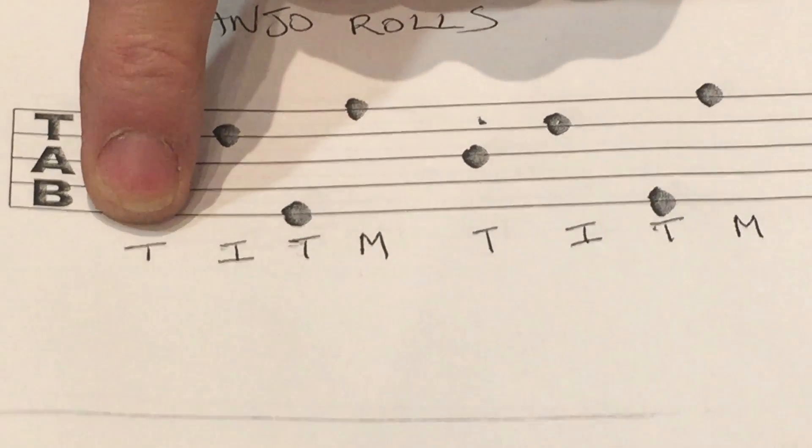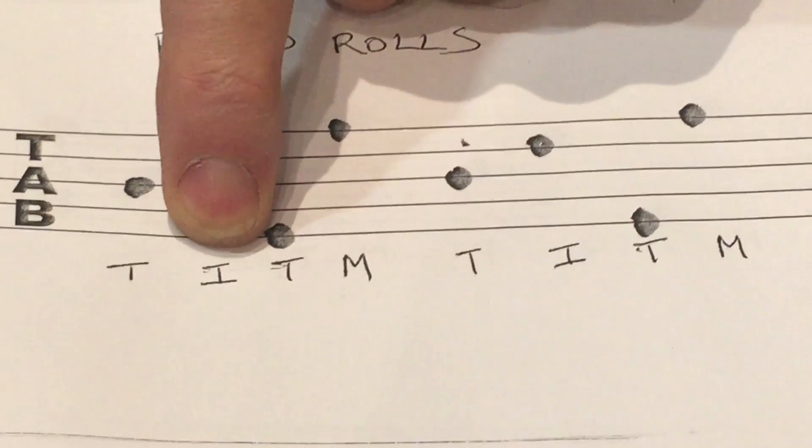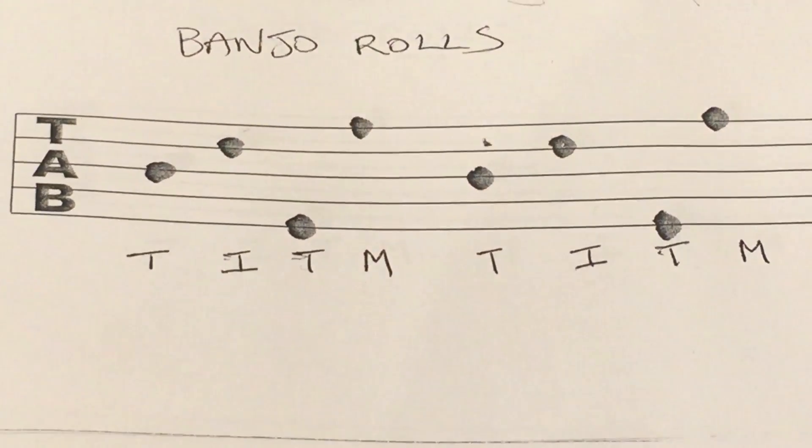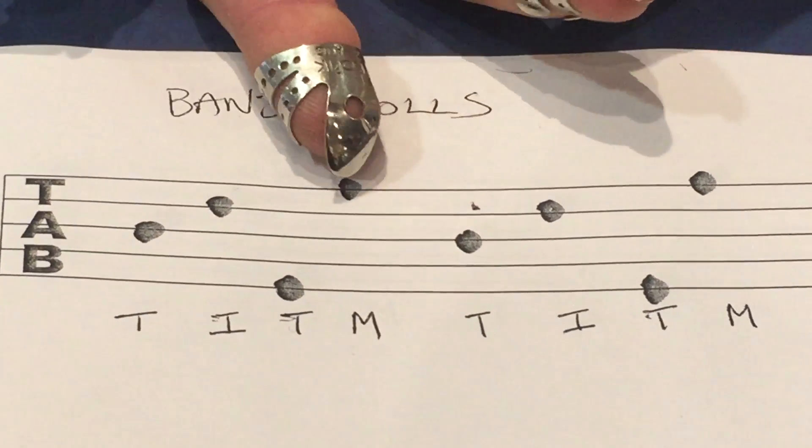And we've got thumb, T, I index, thumb, middle, middle finger. Right, so we've got thumb, index, middle.